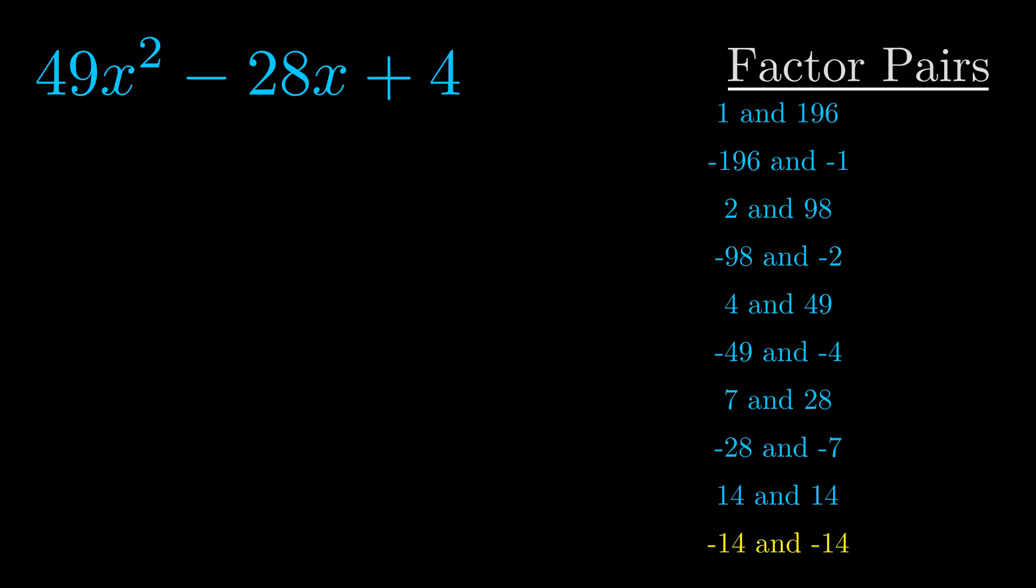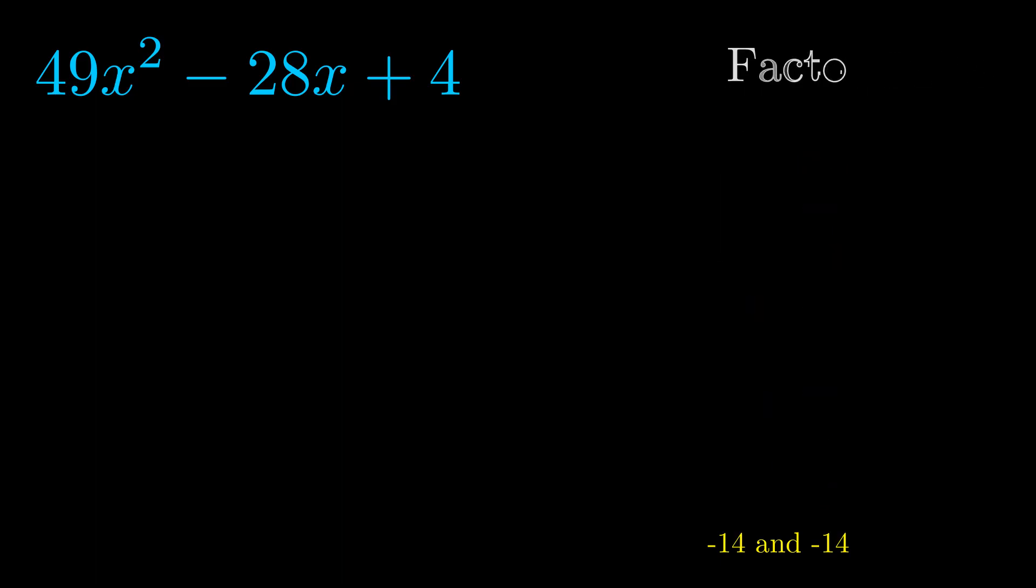And really this is the only factor pair that we need. Once we have this factor pair, what we want to do is use it to split up the b value.